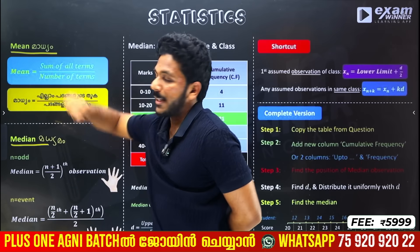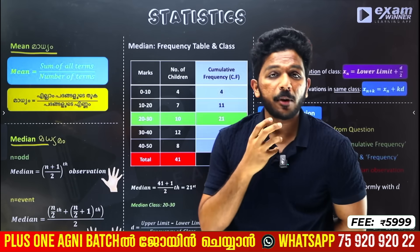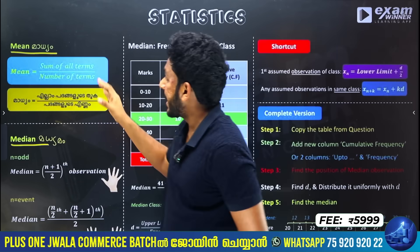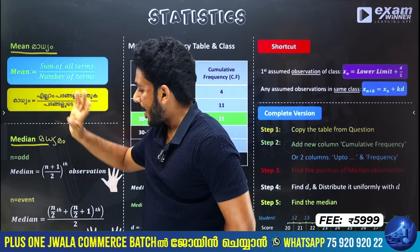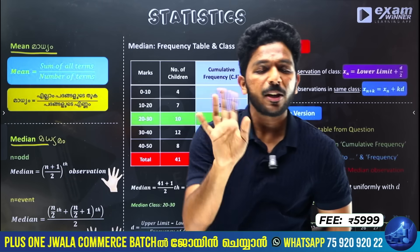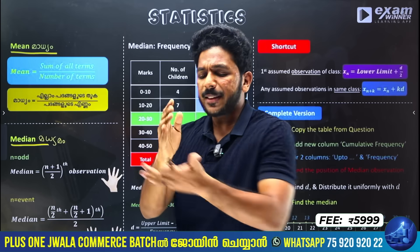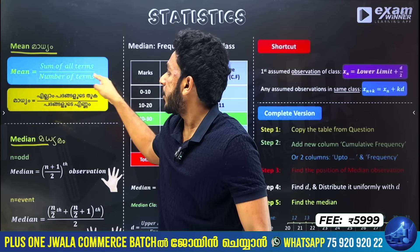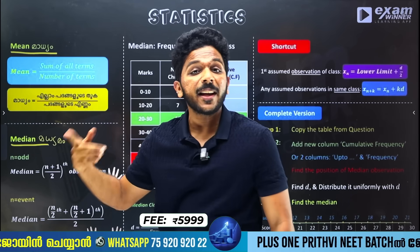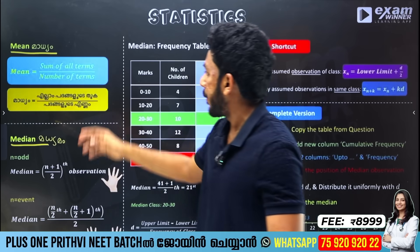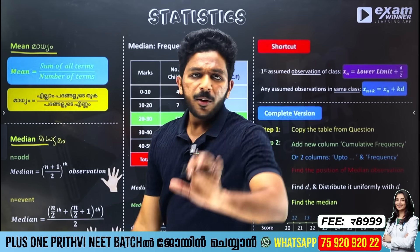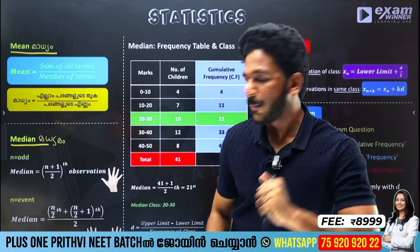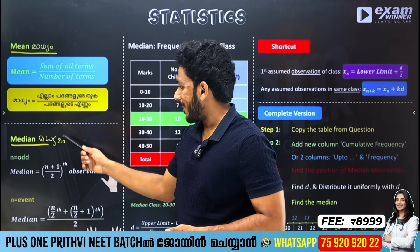If you learn the mean, it is not difficult to learn in one class. The concept is simple: add all the values and press calculate. You do it with 10 values and divide by 10. That is the mean — something you learned back in 5th class.